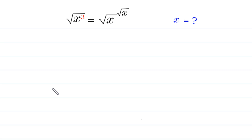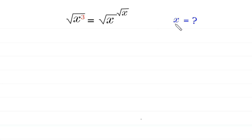Hello, welcome to how to solve this very nice radical equation. The equation is: square root of x cubed is equal to square root of x to the power square root of x. We need to find all possible values of x.